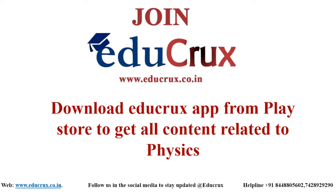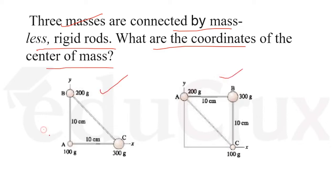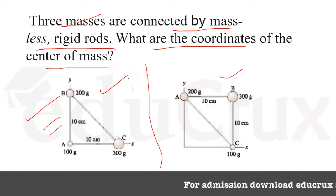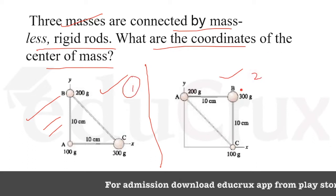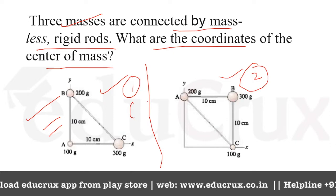Hello everyone, my name is Saloni and today we will discuss a question helpful for all physics competitive exams. The question says: given three masses connected by massless rigid rods, what are the coordinates of the center of mass? There are two figures, so this is essentially a two-part question — part A and part B.